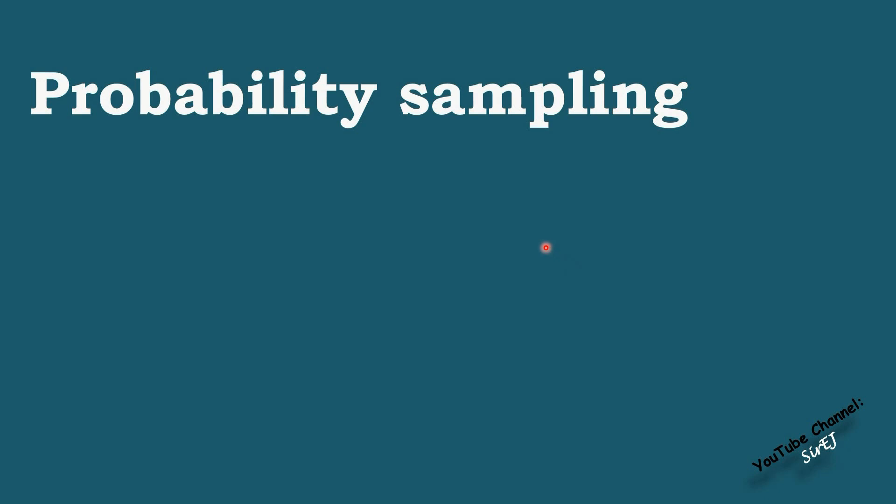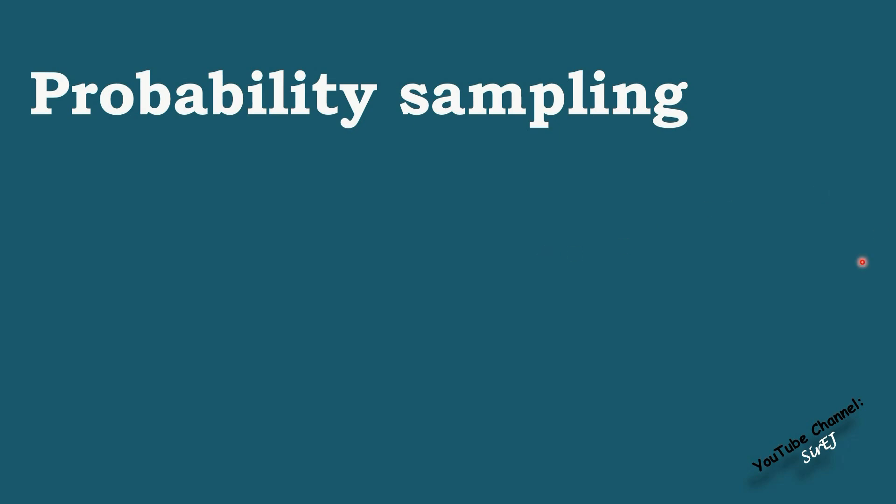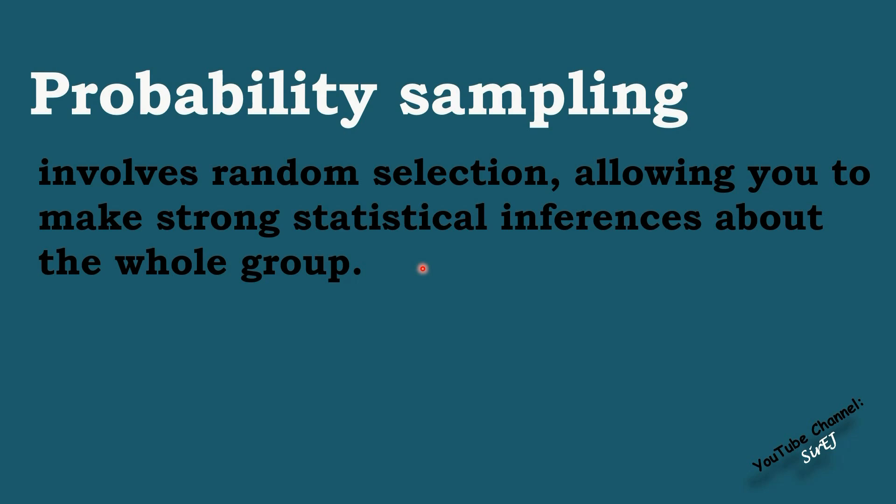Let's start first with the first type of sampling method, which is the probability sampling. When we say probability sampling, it involves random selection, allowing you to make strong statistical inferences about the whole group. Probability sampling means that every member of the population, lahat ng miyembro ng population, ay meron chance na mapili. Kinagamit ito kapag ang research mo ay quantitative research.